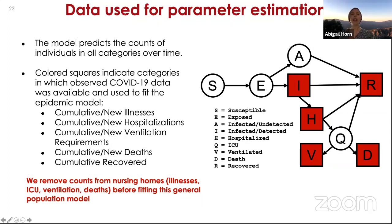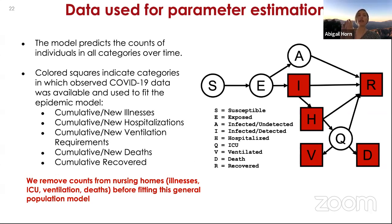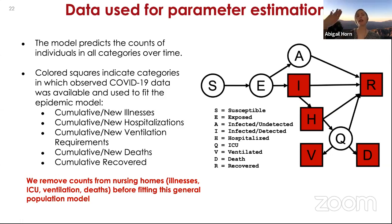All model projections provided are for the LA County population excluding the nursing home population. This is important because nursing home residents are at very high risk — the average age in California nursing homes is around 87 — placing them at the very upper range of the age distribution with much higher risk than the general population.